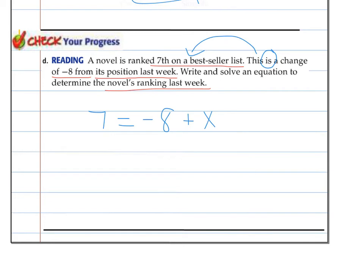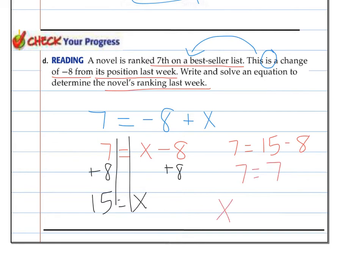Or, I like to think of it as 7 is the position last week going down 8. That's what I like better. So then I make the train tracks. Say, okay, put those 8 positions that it went down back on. And it was at the 15th position last week. Check my answer. 7 is equal to the 15th place going down 8 places. That will get me to the 7th place. So my solution, x is 15, is correct.